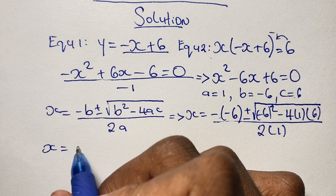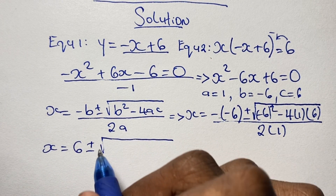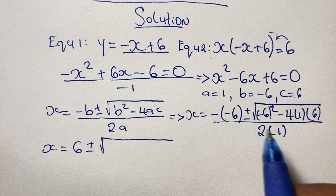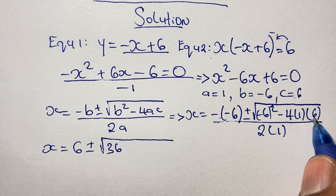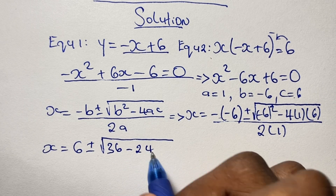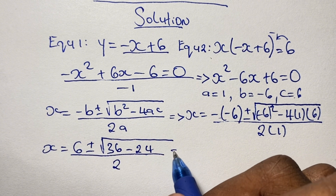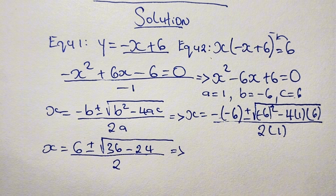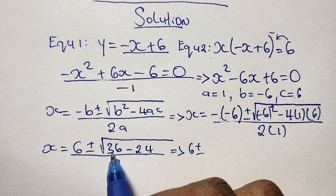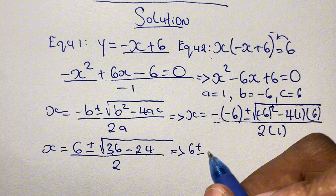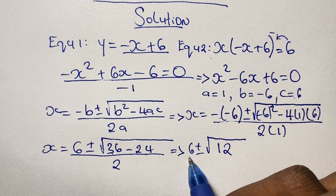Simplifying what we have: negative times negative 6 gives us positive 6, so we have 6 plus or minus the square root of negative 6 squared, which is positive 36. Then minus 4 times 1 times 6, which gives us 24. So we have the square root of 36 minus 24, all over 2 times 1, which is 2. Evaluating further, 36 minus 24 gives us 12, so we have 6 plus or minus the square root of 12, all divided by 2.